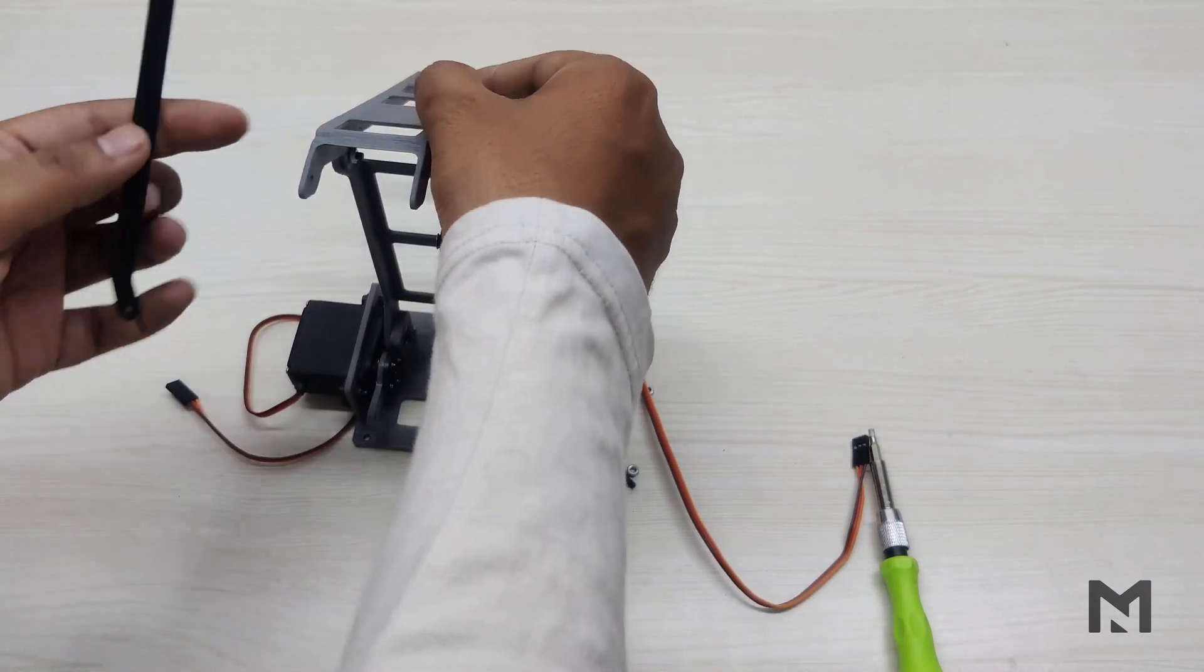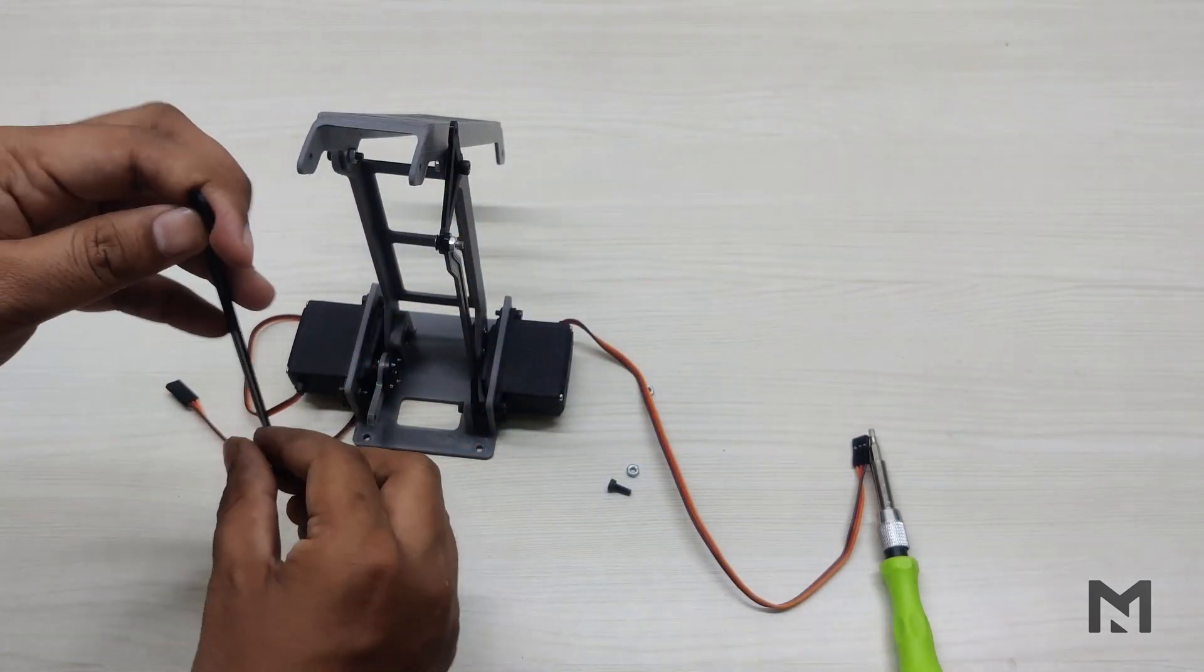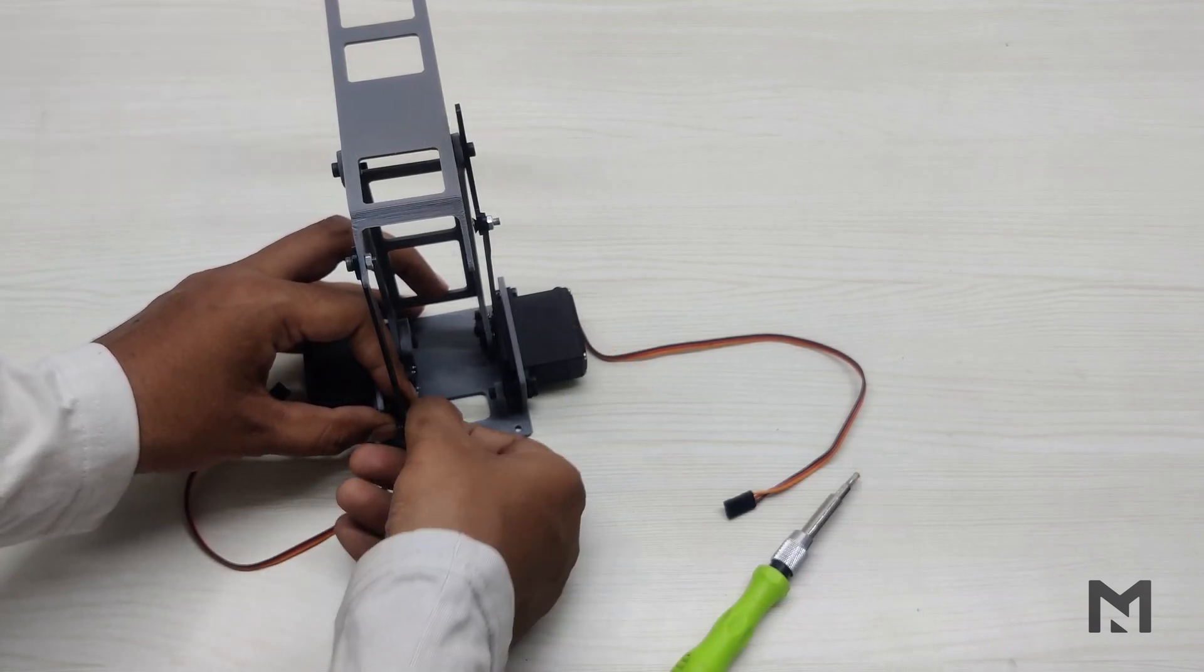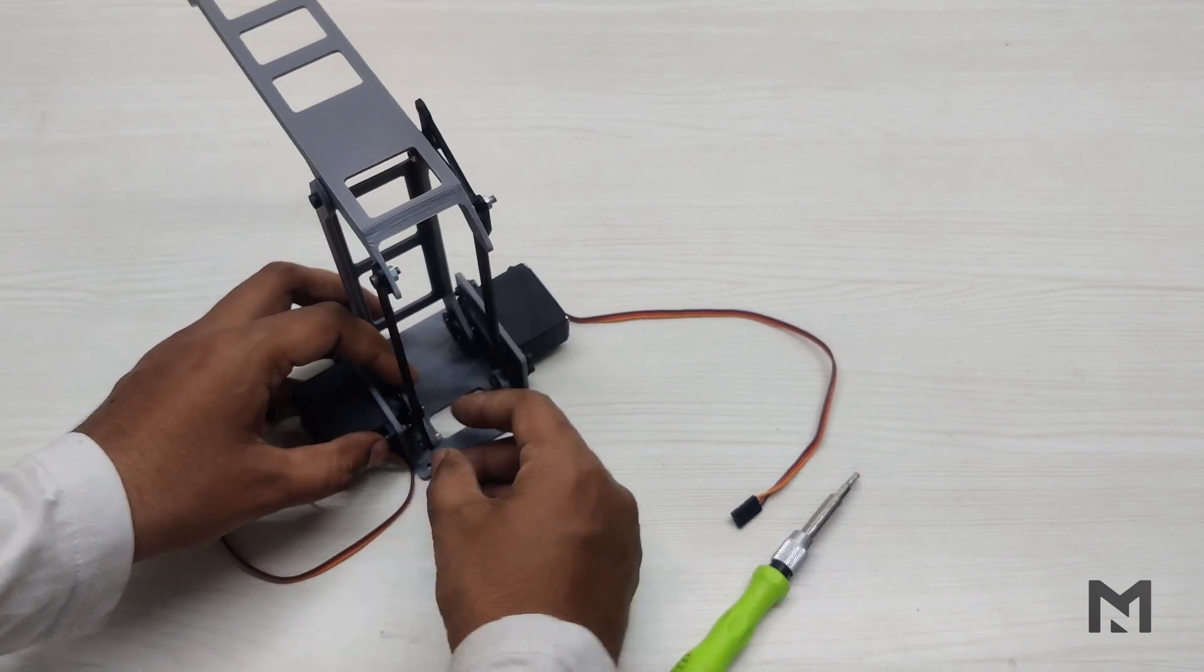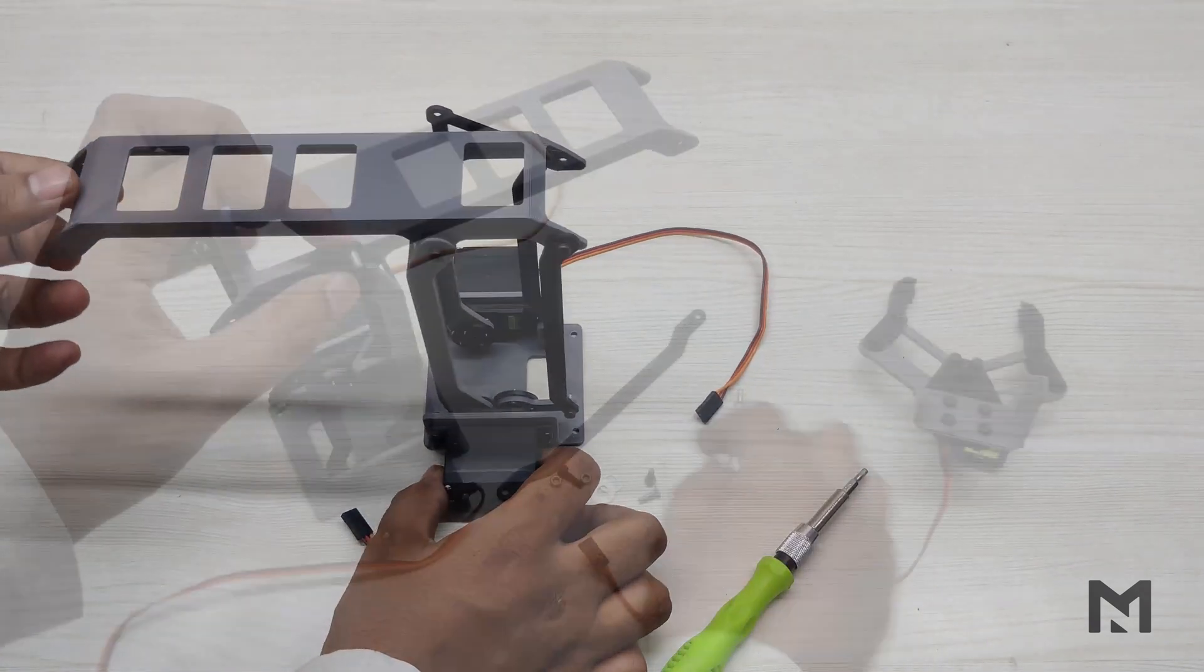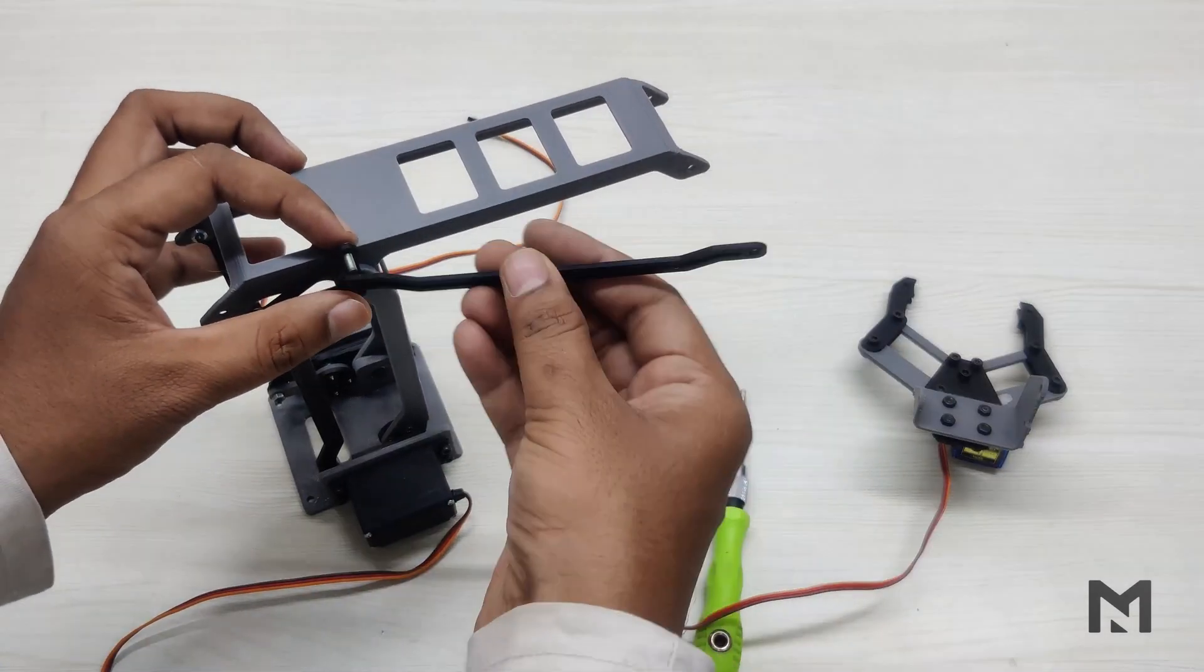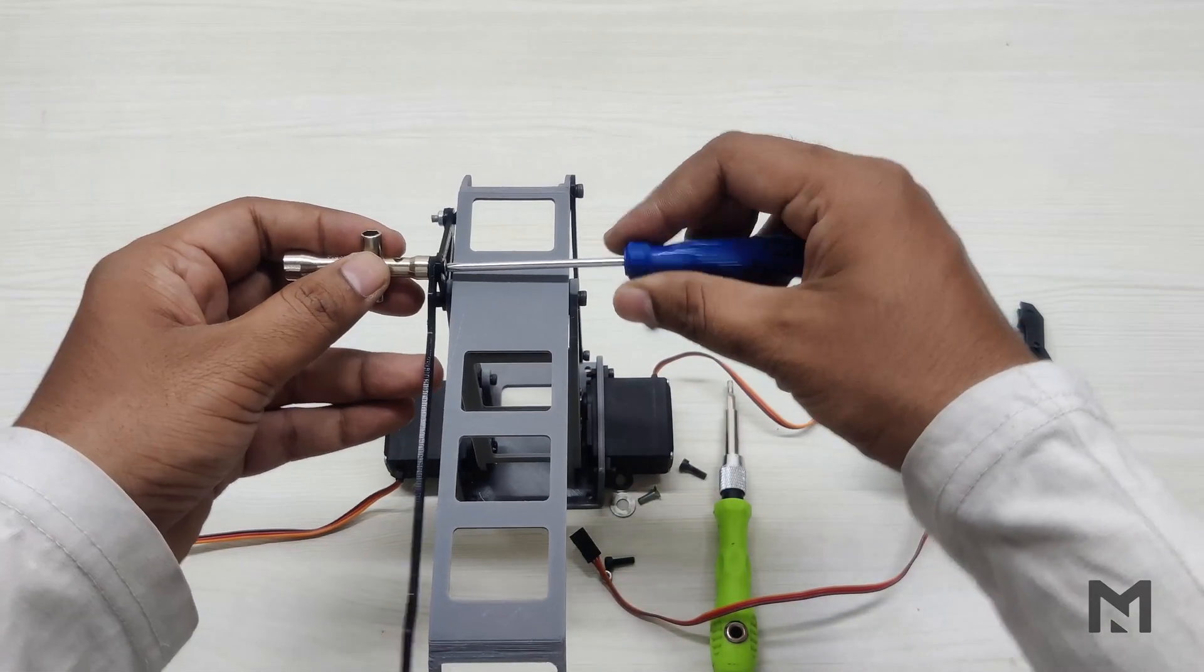Now connect the servo link with the servo arm and the horizontal arm using two screws of 8mm and 10mm length. Now take the horizontal link and connect it with a triangular plate using a flat head screw.